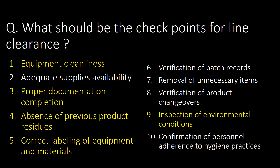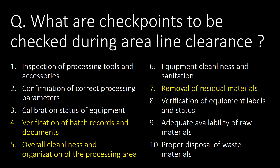What should be the checkpoints for line clearance? Here are 10 checkpoints, of which the most commonly done include: equipment cleanliness, proper documentation completion, absence of previous product residues, correct labeling of equipment and materials, and inspection of environmental conditions. For area line clearance, commonly done checkpoints include verification of batch records and documents, overall cleanliness and organization of the processing area, and removal of residual materials from the previous batch.